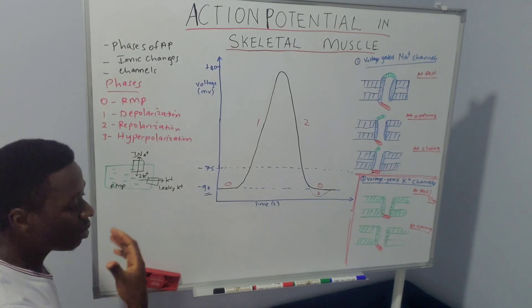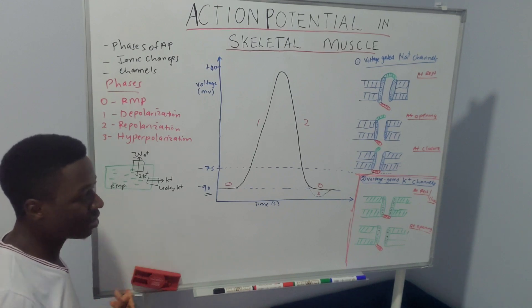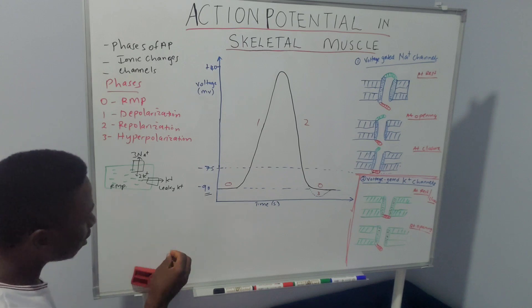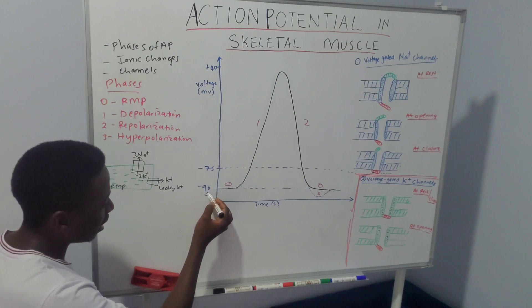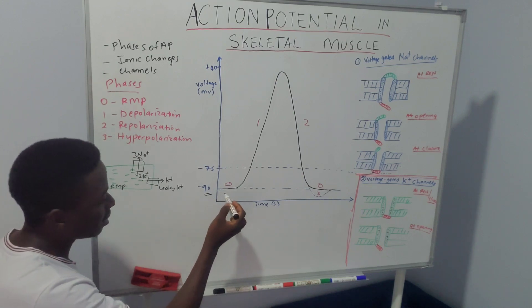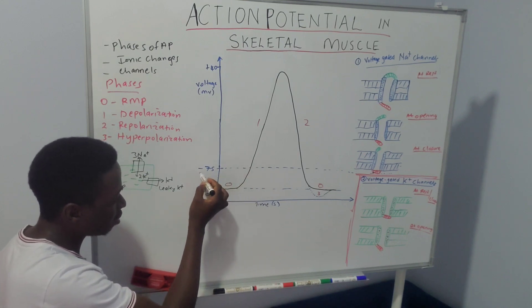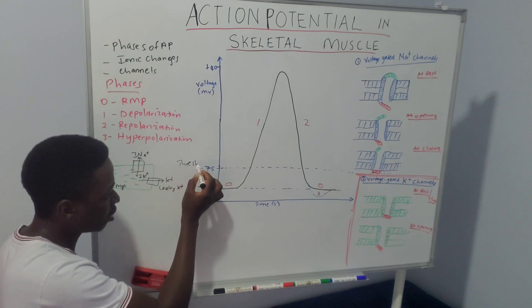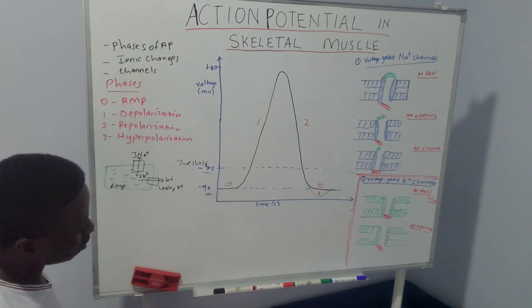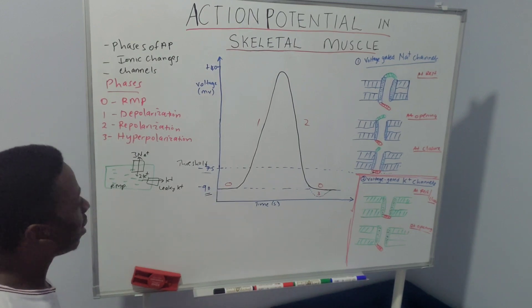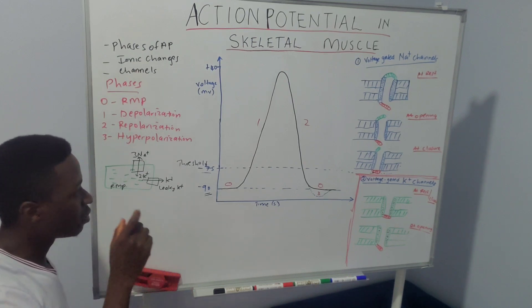So what happens when the membrane of these skeletal muscles is excited, especially following nervous excitation? This brings about electrical and ionic changes within the membrane, opening of some channels, that bring about changes in the membrane potential. When the membrane reaches the threshold voltage — which is about negative 75 in this muscle — this causes opening of important channels called the voltage-gated sodium channels.